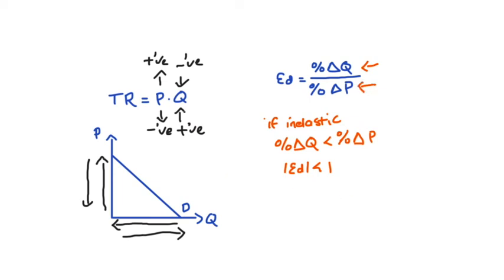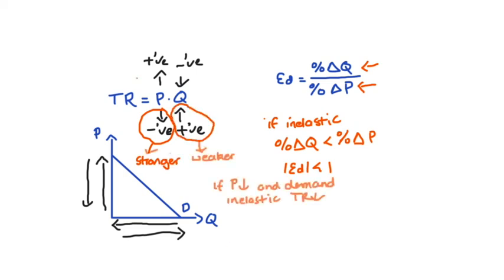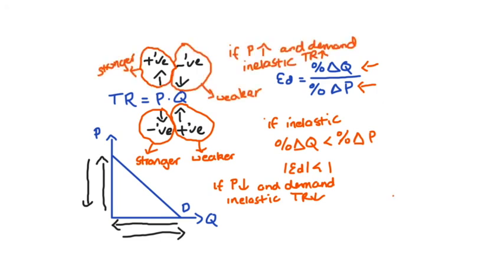In terms of total revenue we get the opposite effect compared to elastic demand — our price changes are the dominant effect. If we had a price decrease, the negative effect of the price change is stronger than any positive effect of quantity increases, so total revenue will overall decrease. If we had a price increase, the quantity would decrease but it is the price increase that is the dominant effect, and so overall we would expect total revenue to increase.